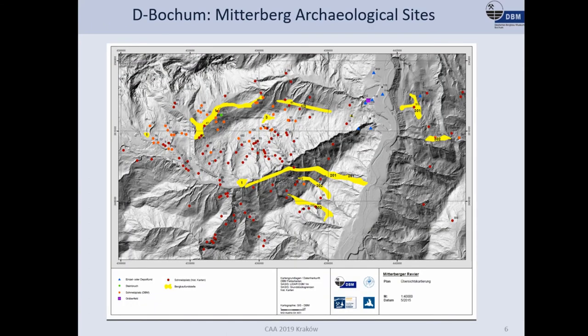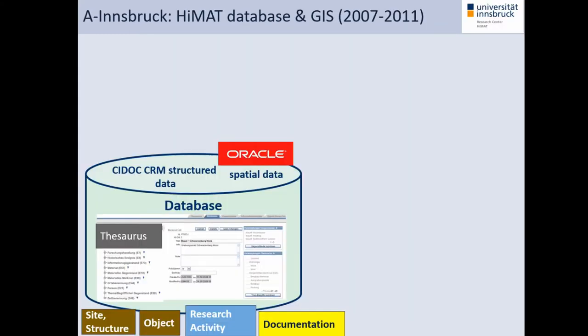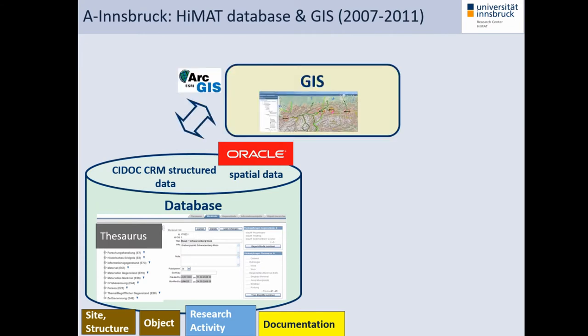For example, we see the mining sites at the Mitterberg region in Austria, which is in Salzburg. What they do is make analysis of their finds — in this case these are slags, the products that come out of the smelting process — and you can analyze them with different research questions. Looking at the database in Innsbruck, we started a database in 2007 because we had a big project integrating various disciplines also from the humanities and history, using an Oracle database, a GIS, and a SharePoint content management system.